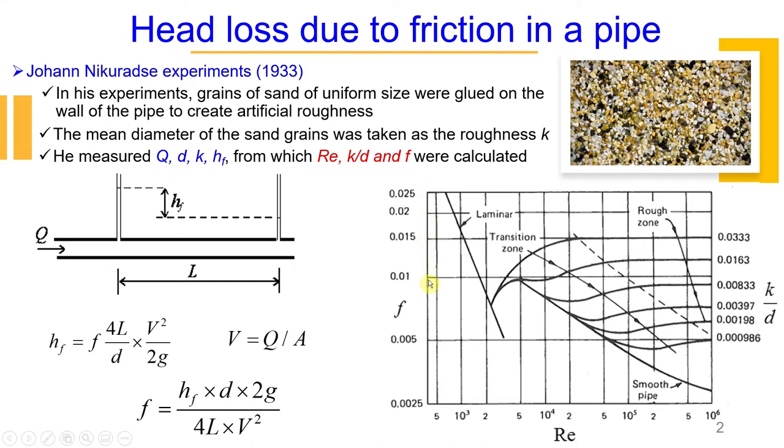So in this laminar zone or laminar flow zone, friction factor depends only on Reynolds number in this part. Here, friction factor depends only on relative roughness, and there is a transition zone. It's only in the transition zone friction factor depends on both, on Reynolds number and also relative roughness.